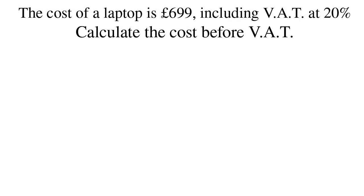In this question, we're given the cost of a computer at £699, including VAT at 20%. We need to work out the cost before VAT is added. A common mistake is to work out 20% of £699 then subtract, but this is wrong.